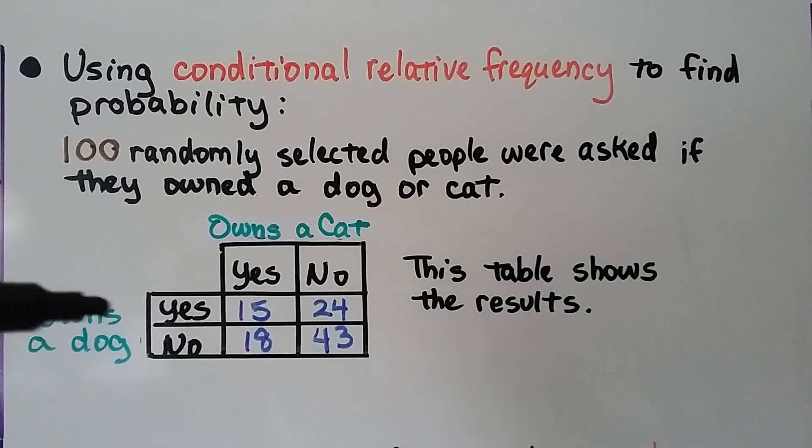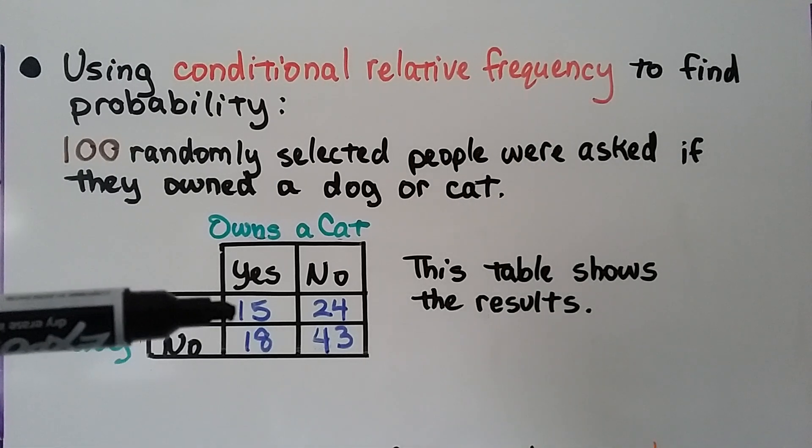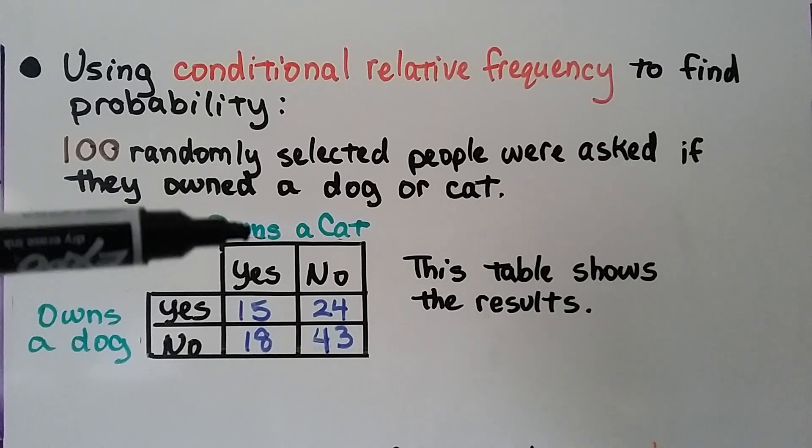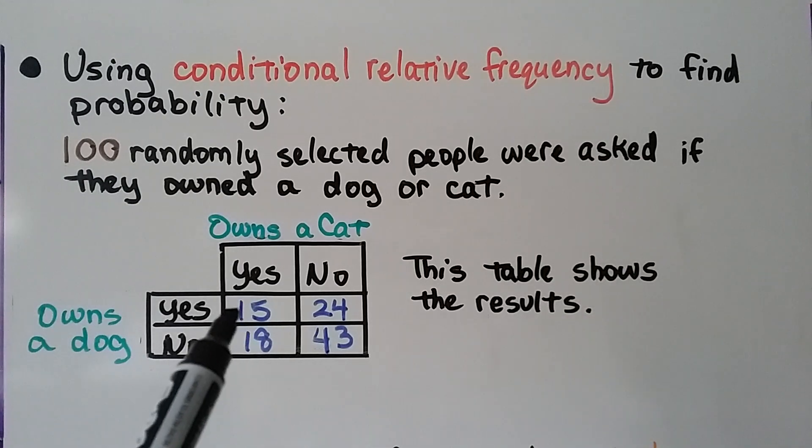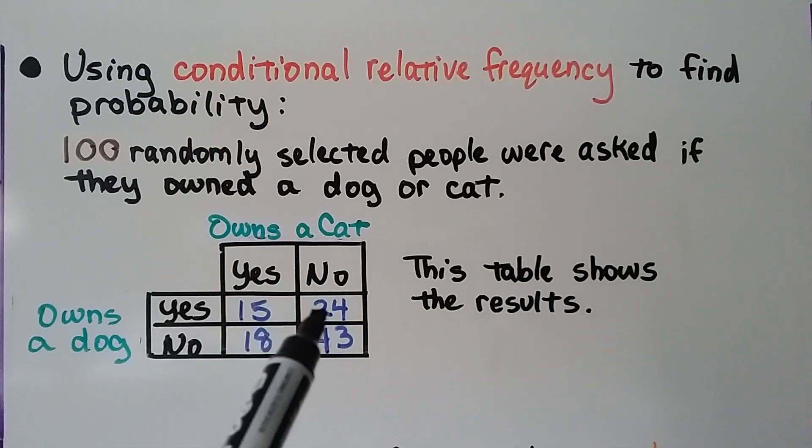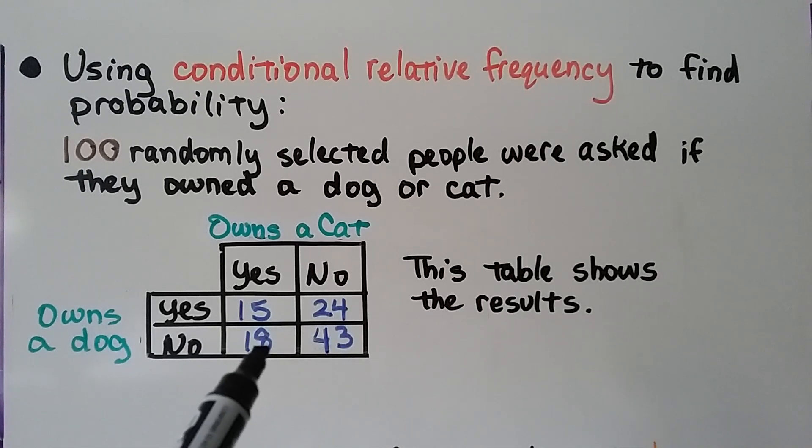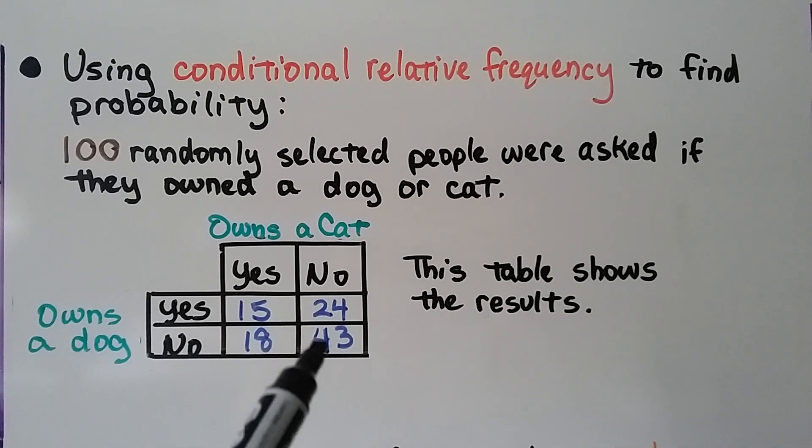So the people here that say yes, they own a dog that are here, yes, they own a cat, that means they both own a cat and a dog. These people own a dog, but not a cat. These people own a cat, but not a dog. And these people don't own a dog or a cat.